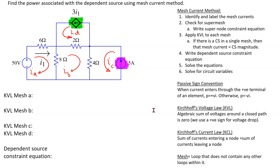In this video we will look at how to use the mesh current method to solve a circuit containing a dependent source. The dependent source is highlighted here — we can see that we have an arrow inside the symbol, so this means this dependent source is a current source. The magnitude of this current source is in terms of another current in the circuit, so this is a current controlled current source.